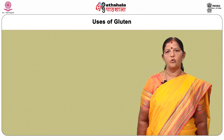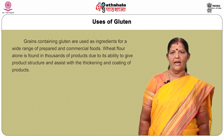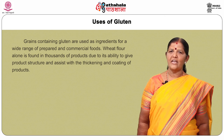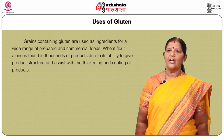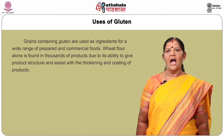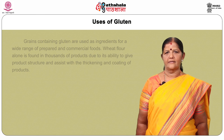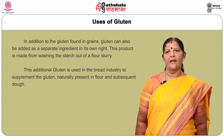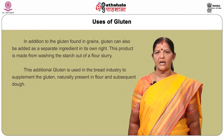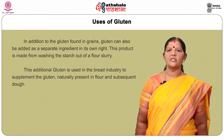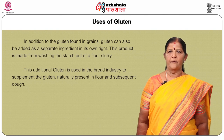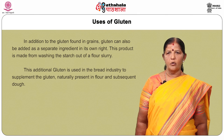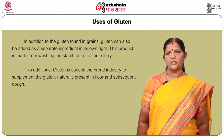Uses of gluten: Grains containing gluten are used as ingredients for a wide range of prepared and commercial foods. Wheat flour alone is found in thousands of products due to its ability to give product structure and assist with thickening and coating. In addition to the gluten found in grains, gluten can also be added as a separate ingredient. This product is made from washing the starch out of a flour slurry. The additional gluten is used in the bread industry to supplement the gluten naturally present in flour and dough.